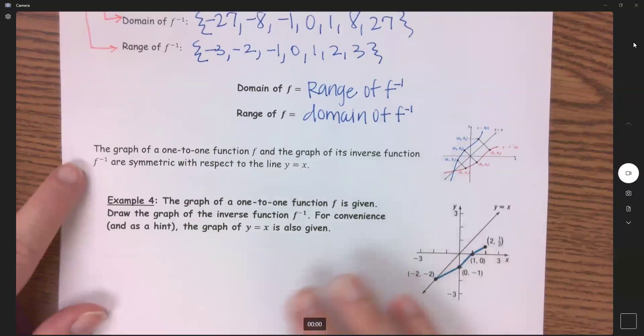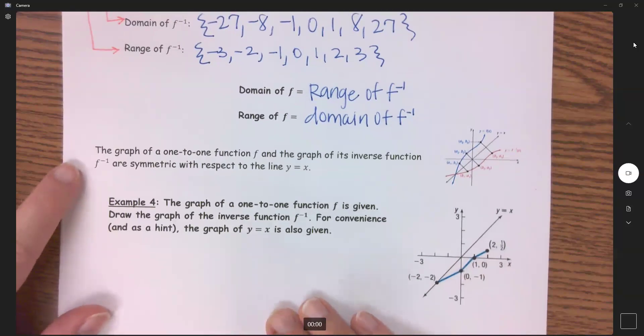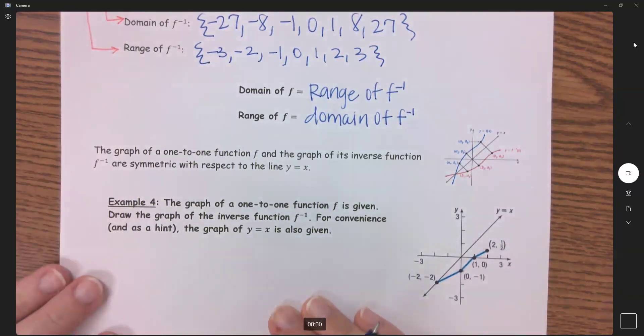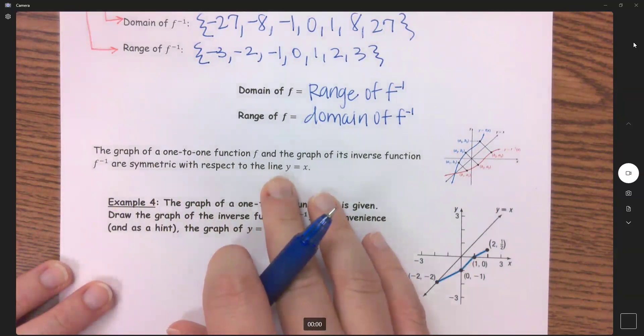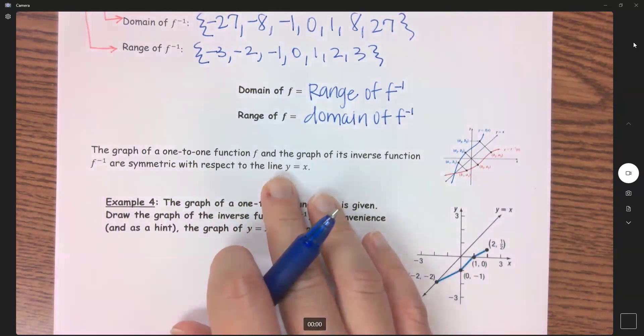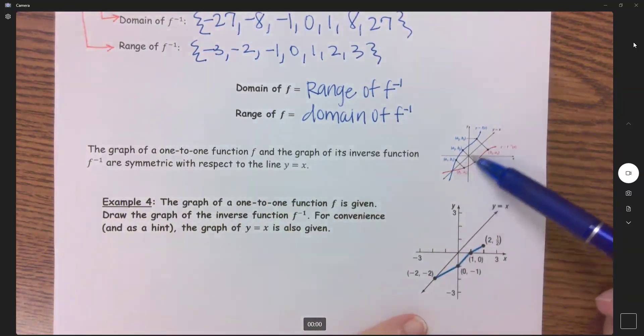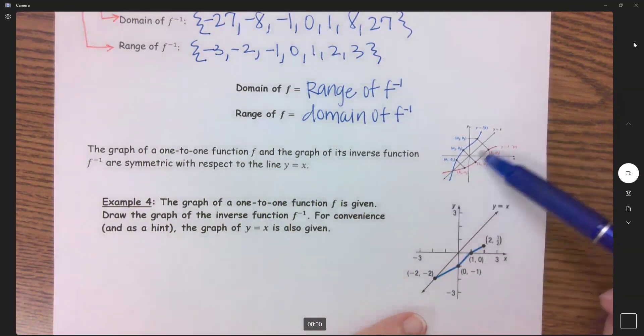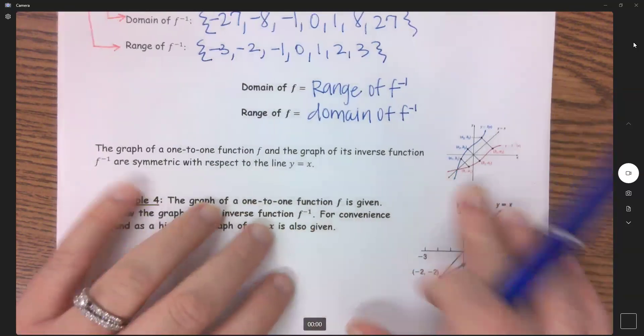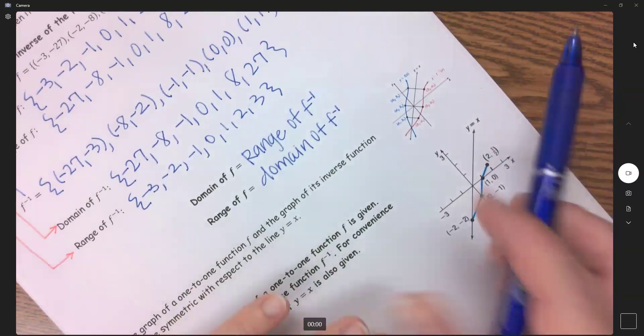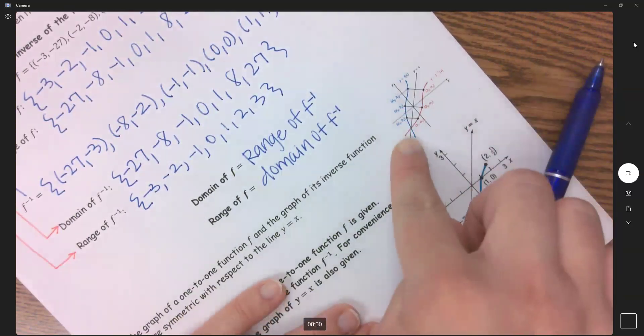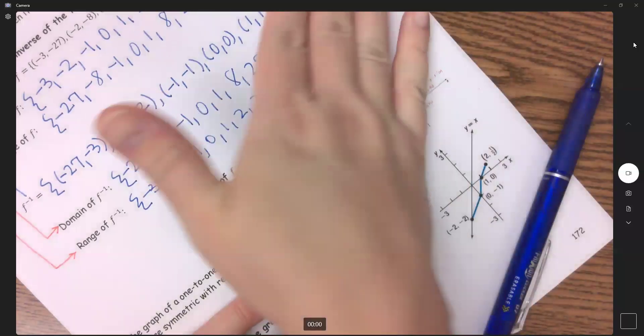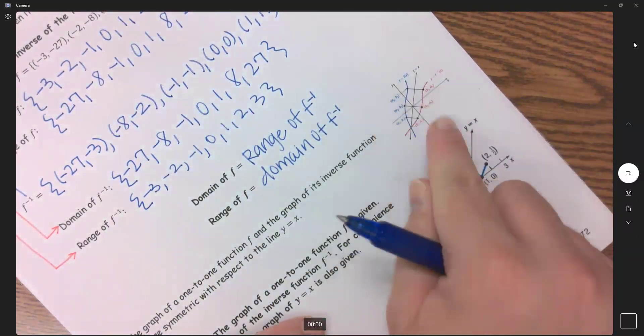Now the graph of a one-to-one function and the graph of its inverse function have a relationship when it comes to the graph. They are symmetric with respect to the line y equals x. So that is also one of our key graphs where it has a y-intercept of 0 and a slope of 1. So it's just this perfectly diagonal line right through the origin. And so if you look at this graph right here and you kind of turn it sideways, if you were to fold along that y equals x you could see that everything there would land on top of each other.